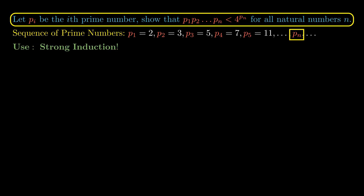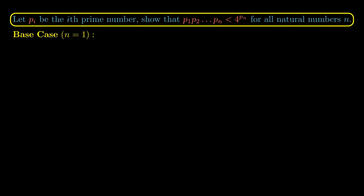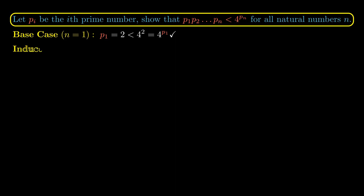We can do this by inducting on the n-th prime. For the base case, we check that this inequality clearly holds: p_1 is equal to 2, and 2 is less than 4 to the power of 2, which is 16.